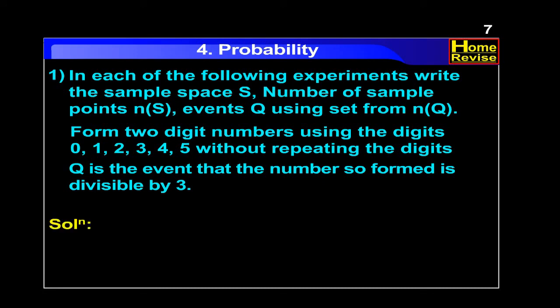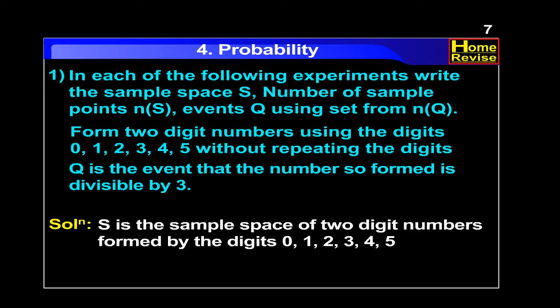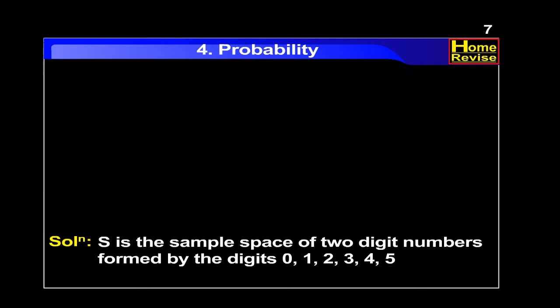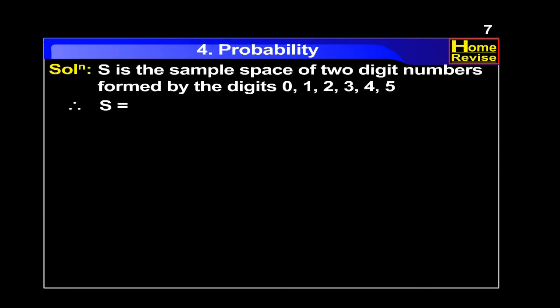Solution. S is the sample space of two-digit numbers formed by the digits 0, 1, 2, 3, 4 and 5. Therefore, S is equal to, in curly brackets: 10, 12, 13,